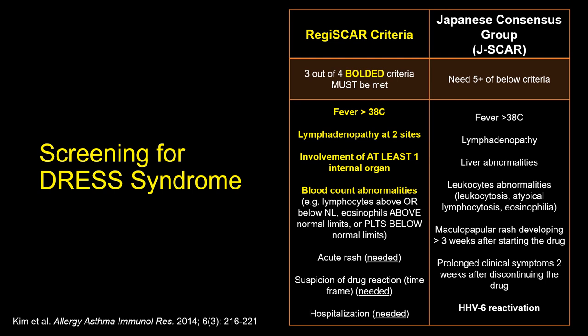The REGISCAR criteria assists in the more accurate scoring of the likelihood of true DRESS. It requires a drug rash and hospitalization with latency in the expected two-to-six-week time frame, plus at least three of the following four: drug fever greater than 38°C (usually hectic in pattern), lymphadenopathy, internal organ involvement (e.g., hepatocellular liver injury or AKI), and CBC anomalies such as lymphocytosis, lymphopenia, or eosinophilia. Distinguishing DRESS from a benign morbilliform reaction is quite simple since these DRESS patients are typically sicker overall and have much more new problems coinciding with the rash onset.